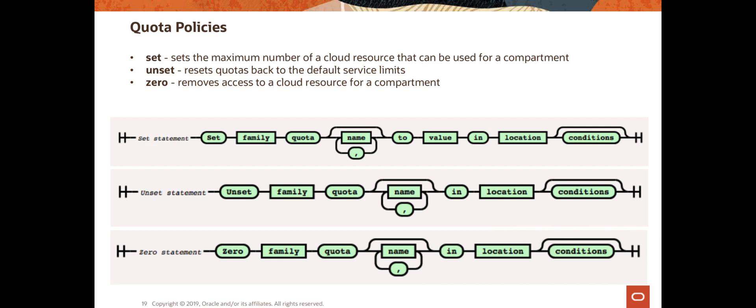After the name, what you put depends on the type of statement. For set statements, you put the value of the quota and then specify the compartment for that quota. At the very end, there is an optional condition statement. This condition statement can be, for example, where request.region is equal to us-phoenix-1. Currently, the conditions that can be used are request.region and request.ad, where it is available.